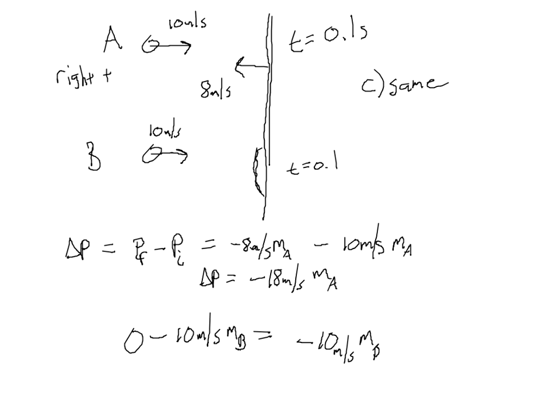Since 18 is bigger than 10, Ball A experienced the greatest momentum change, assuming the two balls have the same mass. If you wanted to find the force on each ball, you could do that using the time — but the change in momentum doesn't depend on time; only the force depends on time. The key in many momentum problems is to remember that momentum is a vector, so if two momenta are in opposite directions, one of them will have to be negative.